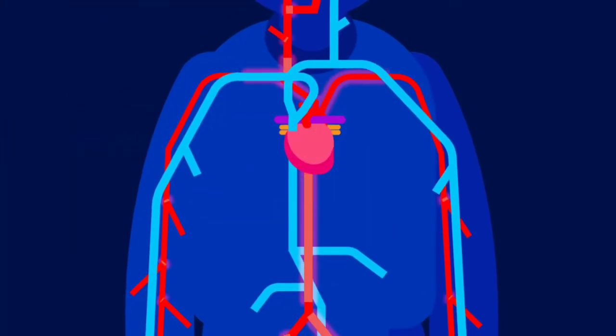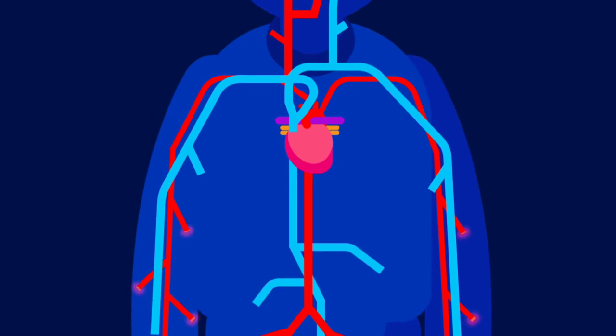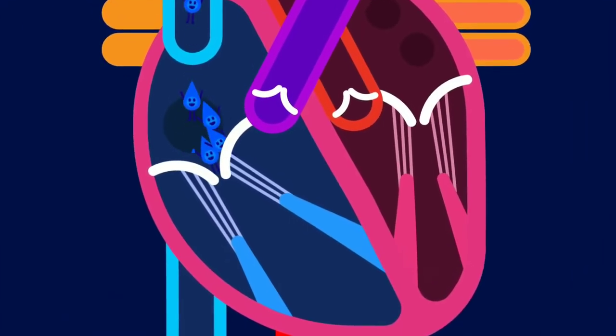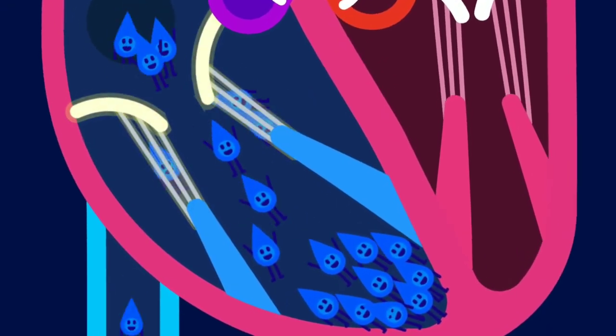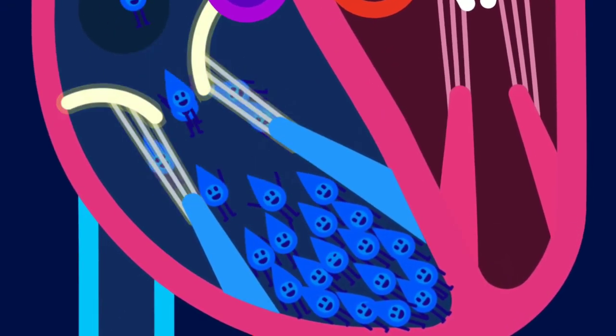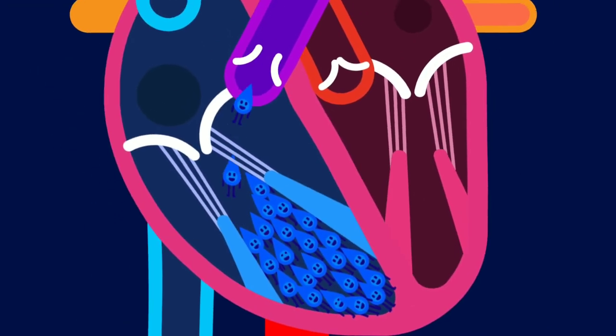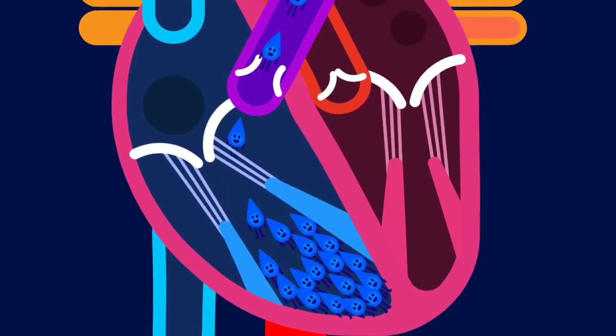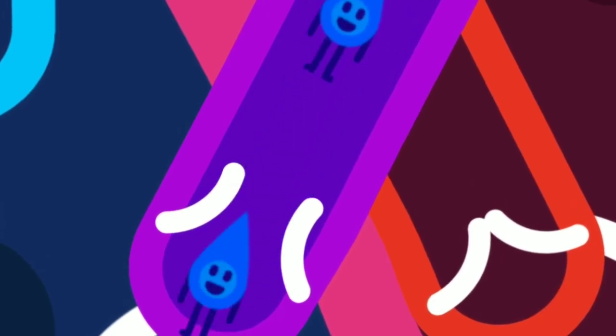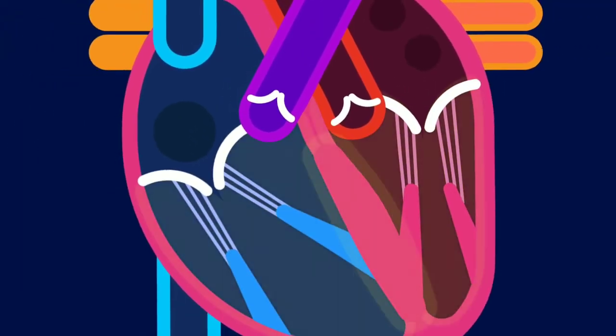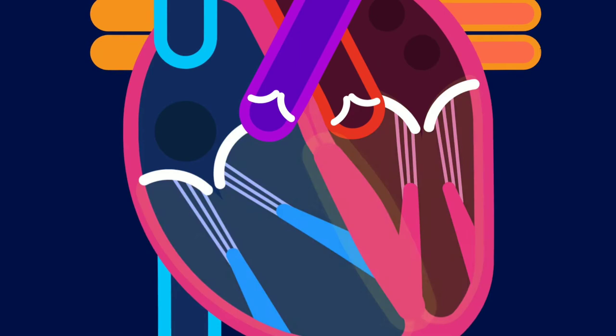The right atrium receives deoxygenated blood and pumps blood to the right ventricle. The tricuspid valve prevents backflow of blood to the right atrium. The right ventricle pumps deoxygenated blood to the lungs via the pulmonary artery. Here the semilunar valves prevent backflow of blood. The septum prevents mixing of oxygenated and deoxygenated blood.